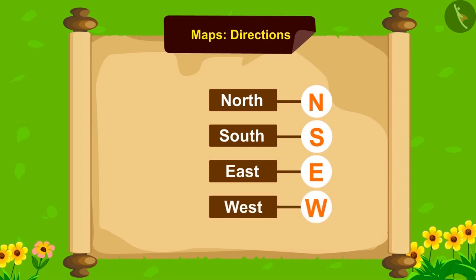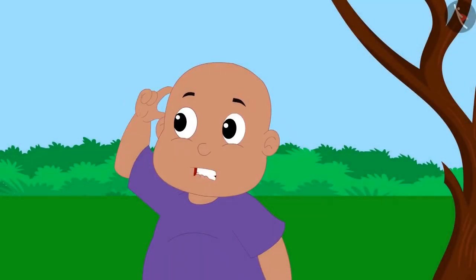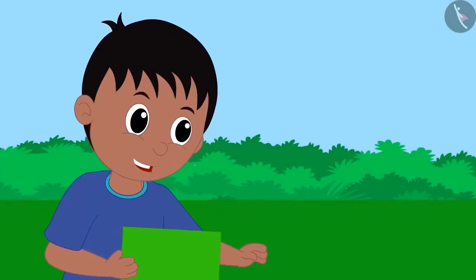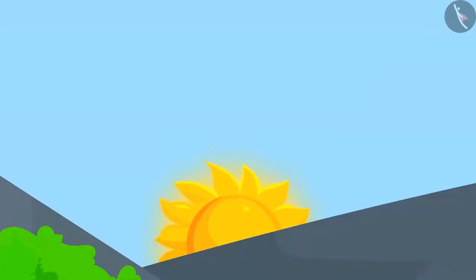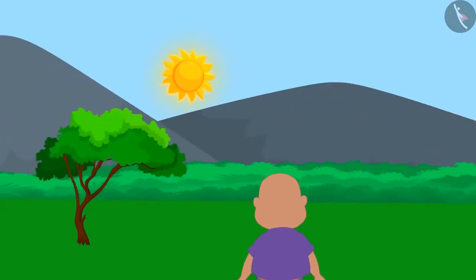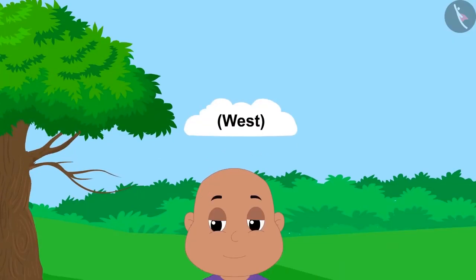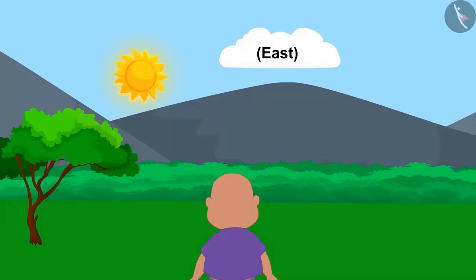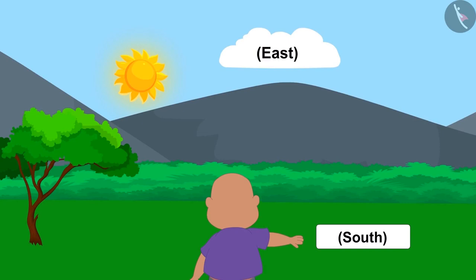They can be written in short form too. Confused Bablu asks how to recognize these directions. Raju says it is very easy: suppose you are looking at the direction where the sun rises, so you are looking towards the east. West will be towards your back, south would be towards your right hand, and north would be towards your left hand.